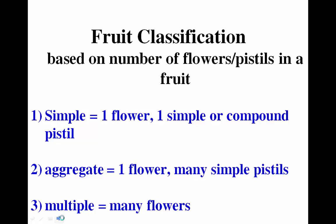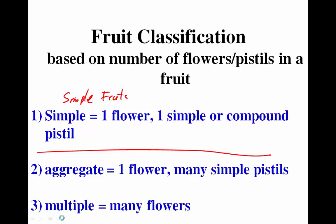There are two basic types of fruits: simple fruits, and complex or compound fruits. Within compound fruits there are two types: aggregate and multiple. Let's go through these one at a time, starting with simple fruits, which come from a single flower.